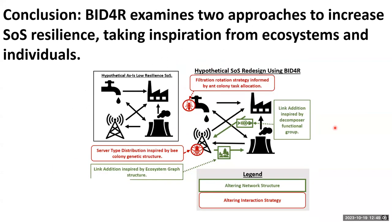In summary, we have two different approaches: ecosystem-based and agent-logic-based, giving us 30 strategies total — heuristics for network structure validated with two different tests, and agent logic validated with an agent-based model of an electric motor manufacturing supply chain. The vision is to apply these together to increase system-of-systems resilience using biologically inspired design: apply filter rotation strategies informed by ant colony task allocation, add links inspired by decomposer functional groups or ecosystem graph structure, and use genetic or bee colony genetic structure to inform resource allocation decisions prior to a fault. The goal is to take naturally inspired solutions and apply them together to improve system-of-systems resilience.